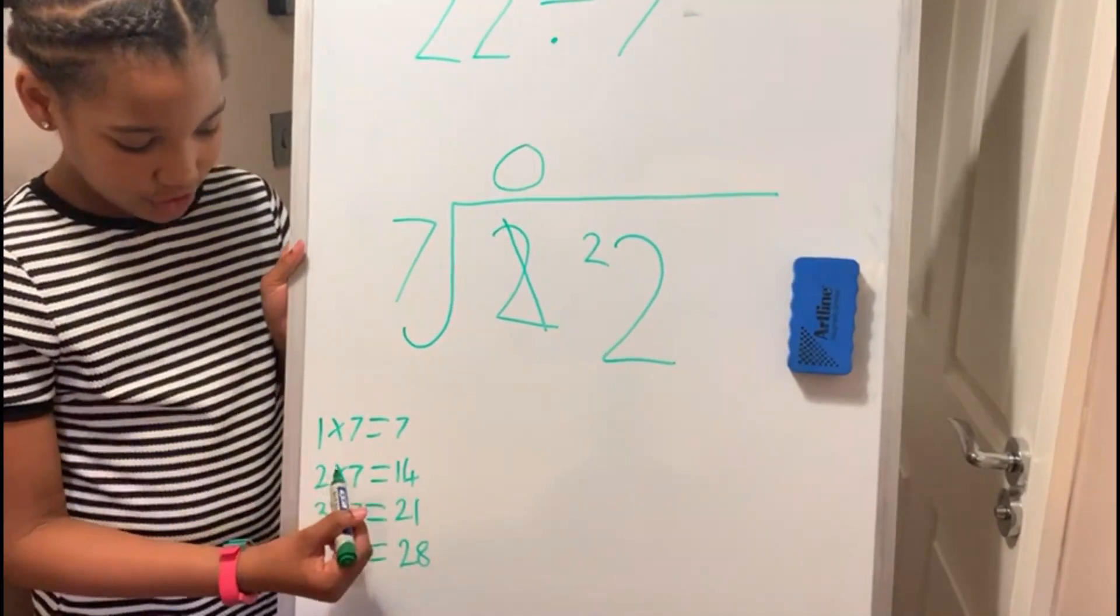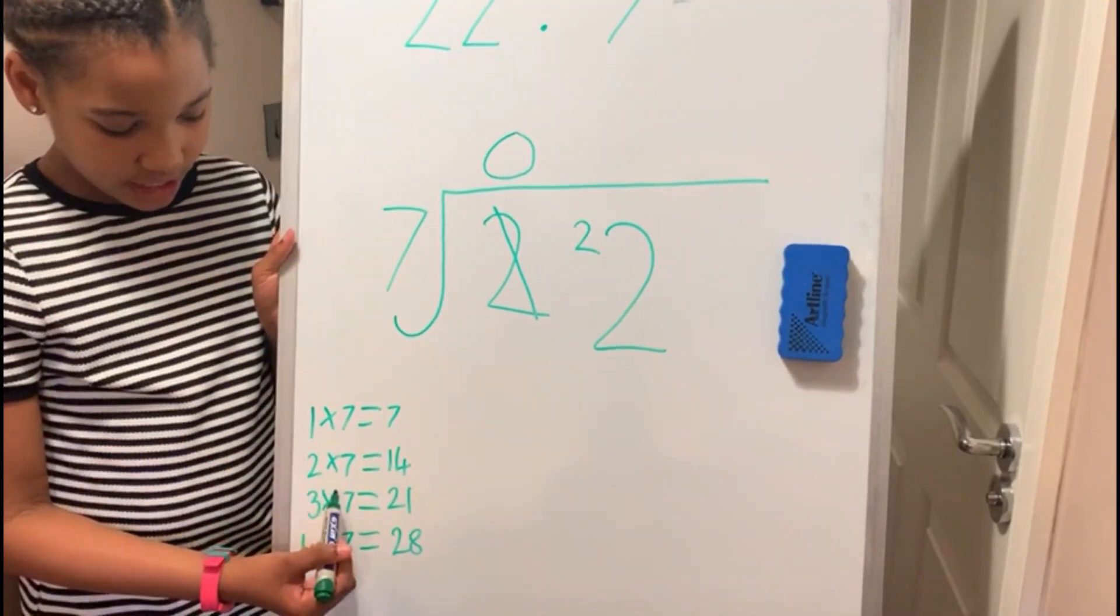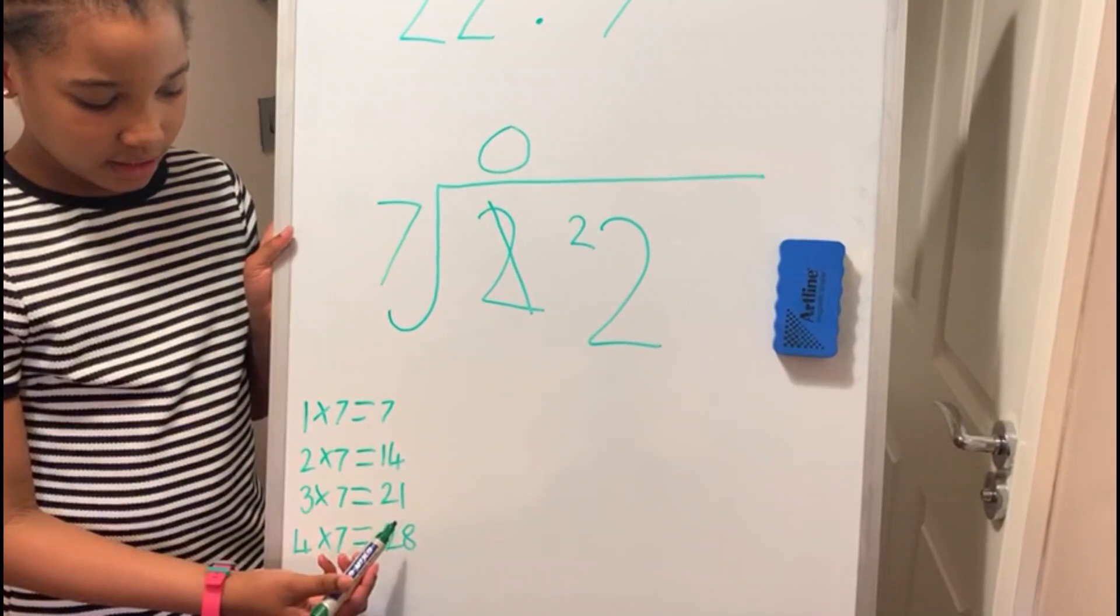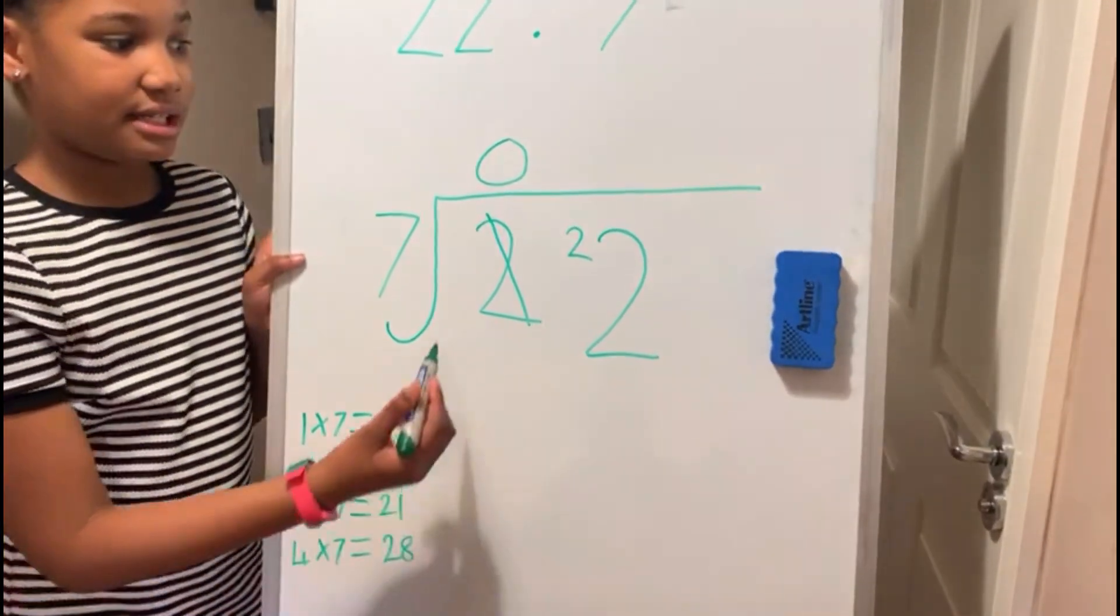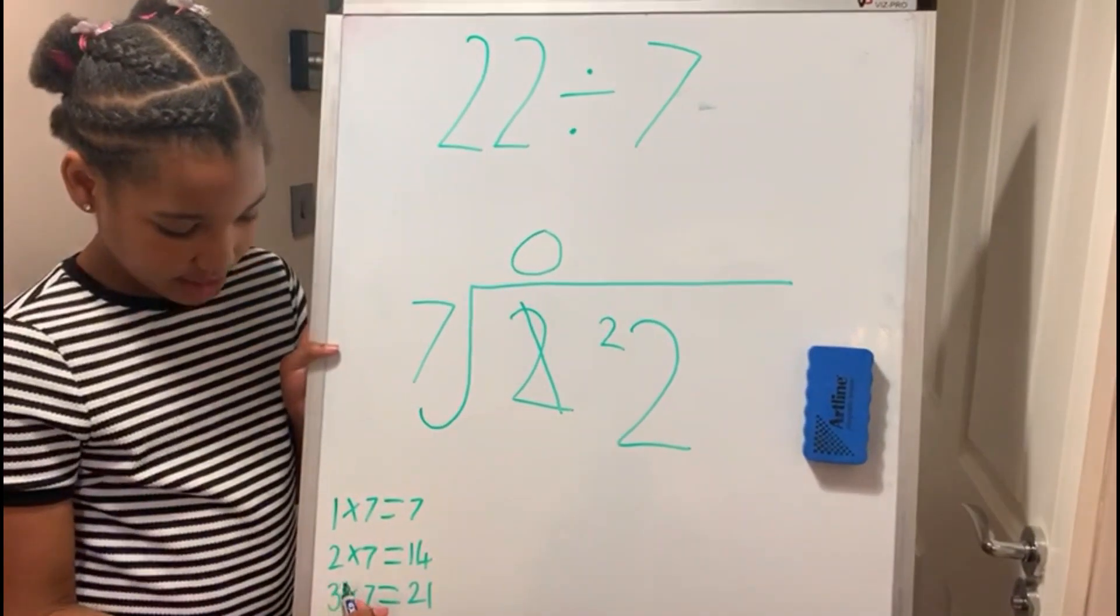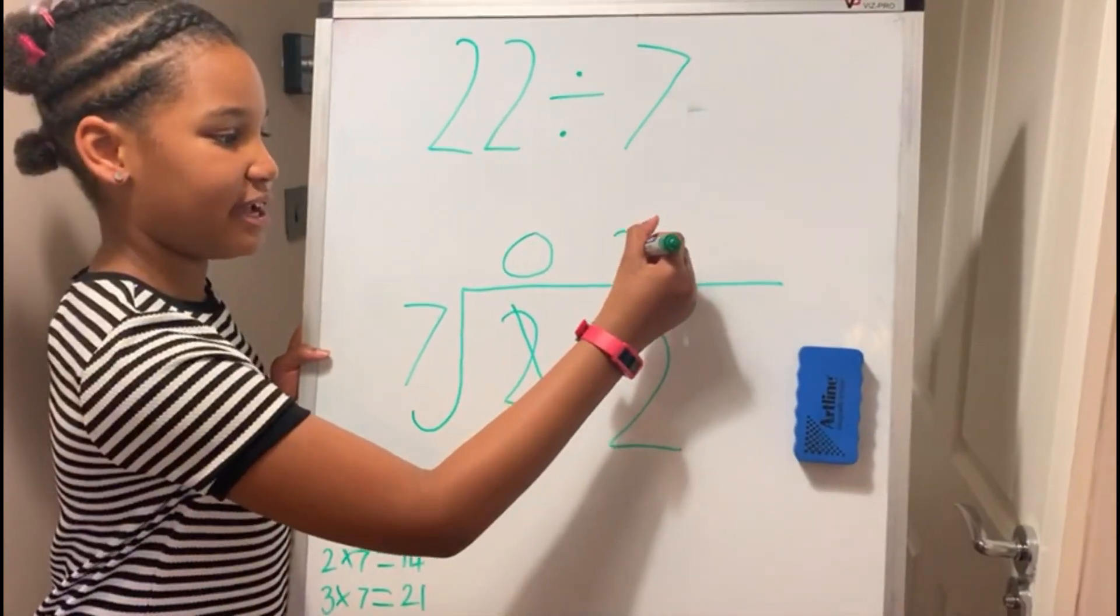1 times 7 is 7, 2 times 7 is 14, 3 times 7 is 21, and 4 times 7 is 28. Now 21 is underneath 22, so you need to do that one. And it's 3 times 7, so you write 3 here.